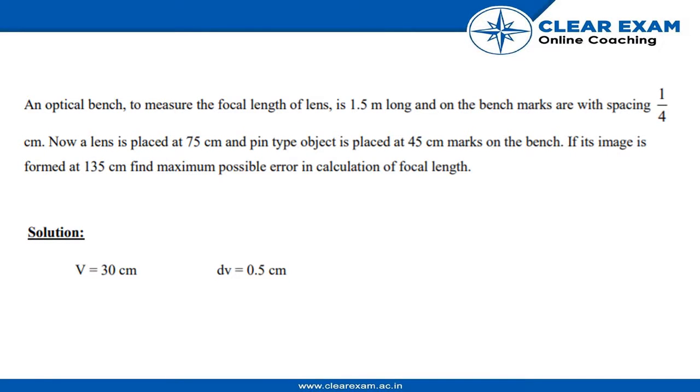The question says an optical bench to measure the focal length of lens is 1.5 meters long, and on the bench marks are with spacing of 1/4 centimeter. Now a lens is placed at 75 centimeters and a pin type object is placed at 45 centimeter mark on the bench. If its image is formed at 135 centimeters, find the maximum possible error in calculation of focal length.